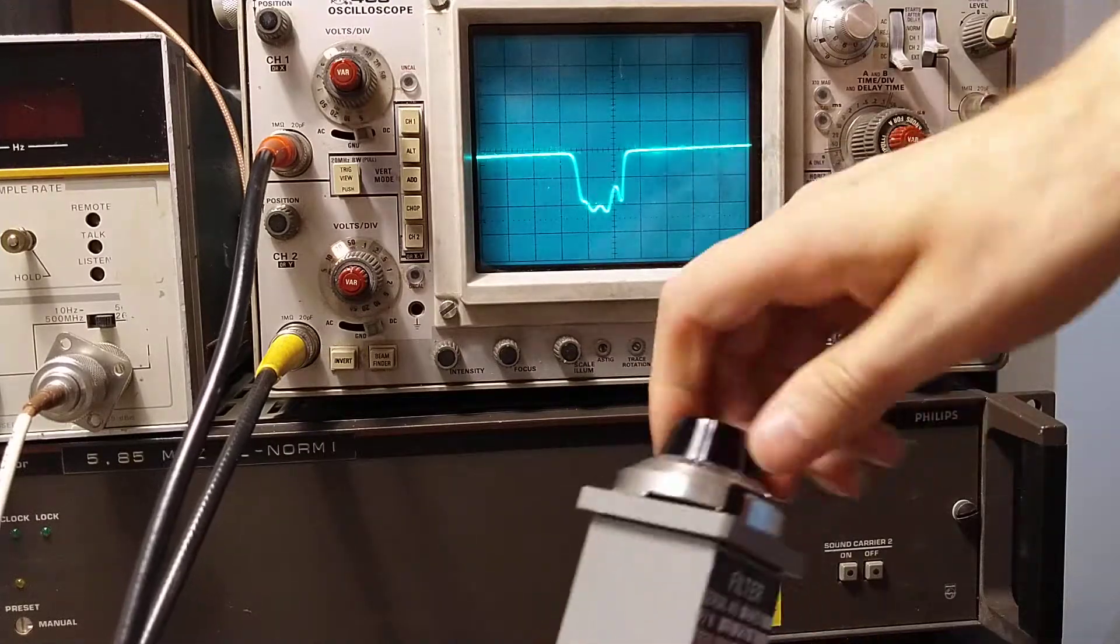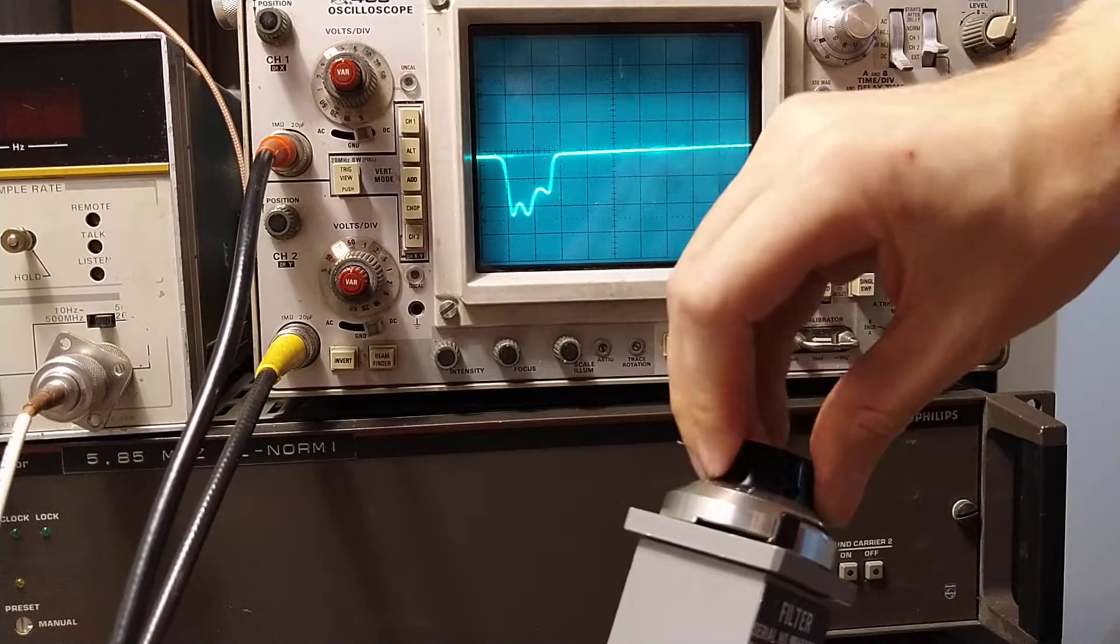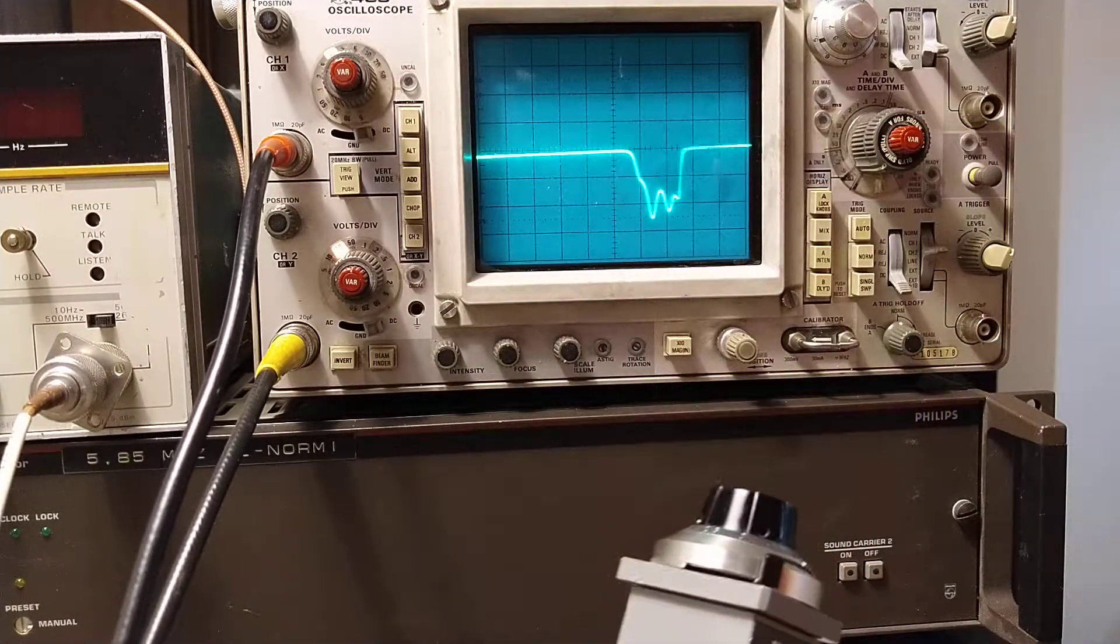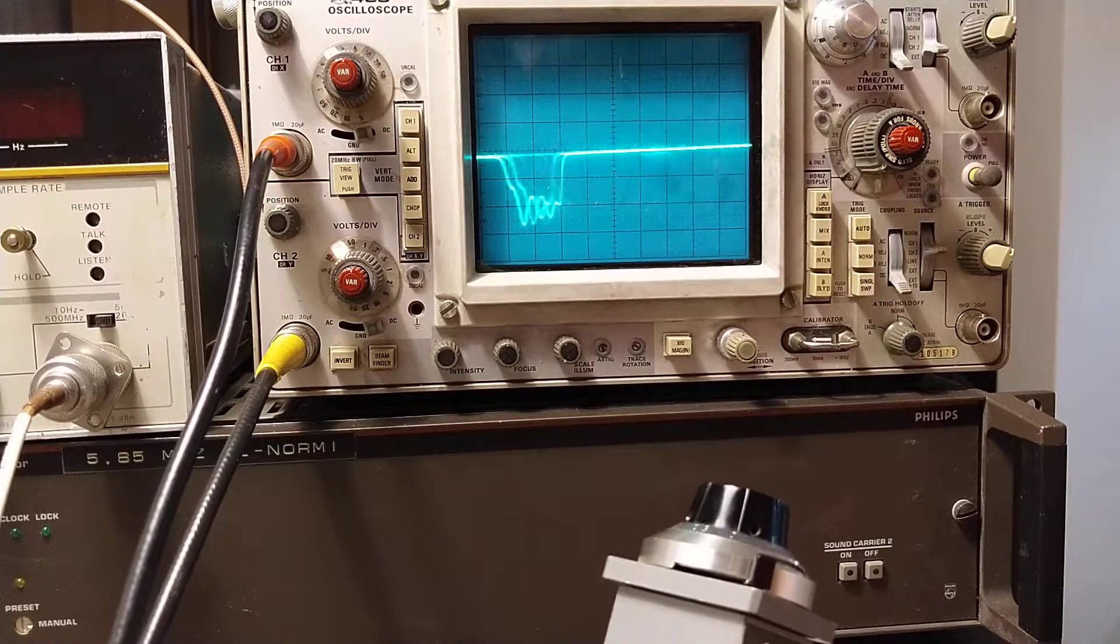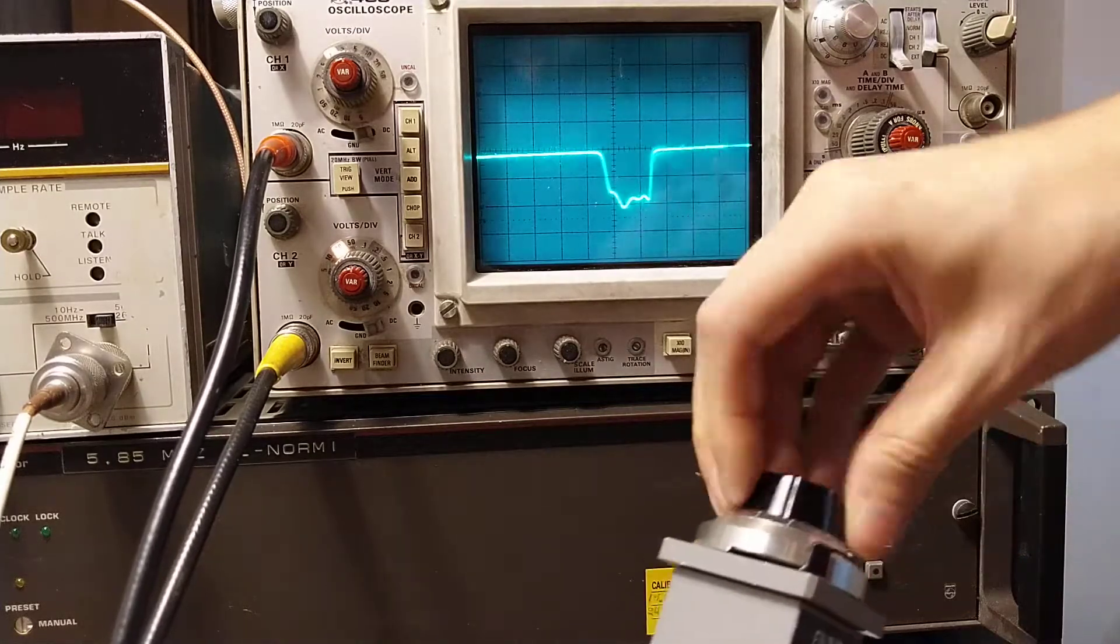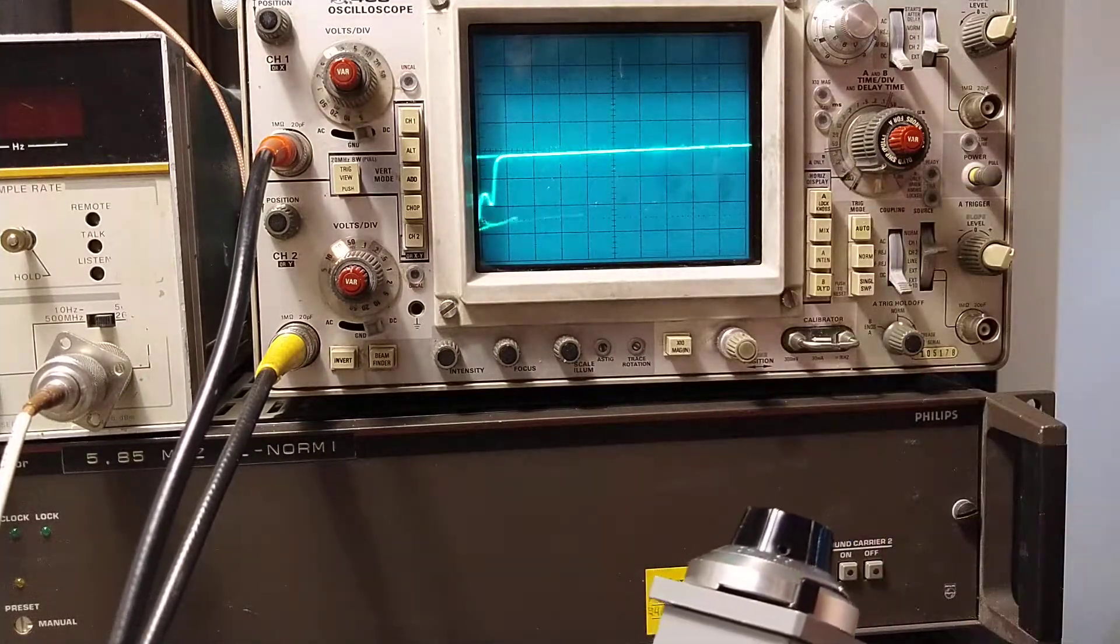I'd have to really measure this against a real VNA or even a Scalar analyzer like this one. If we change the center frequency we see the shape stays the same. So the filter shape really is like that.